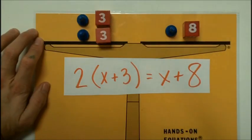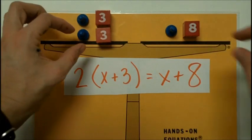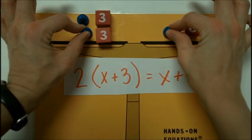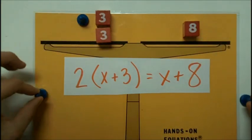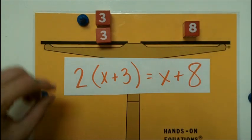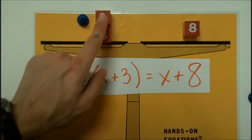Now we can use our normal legal moves to simplify this equation. We can take a pawn from each side, or an x from each side, and then I can see that this together makes 6.